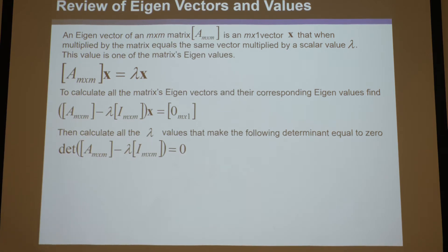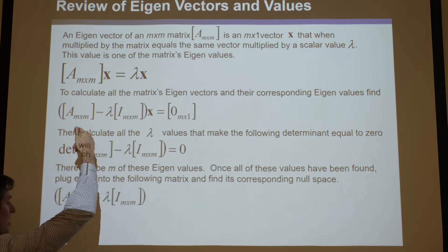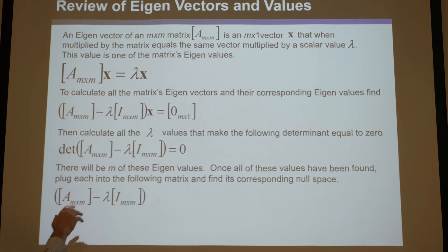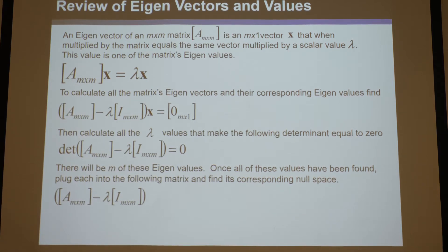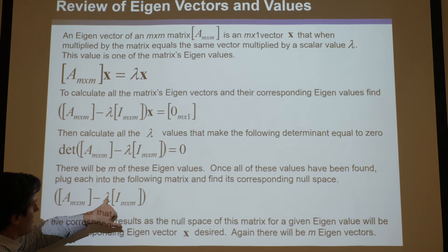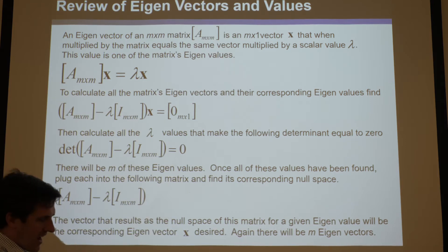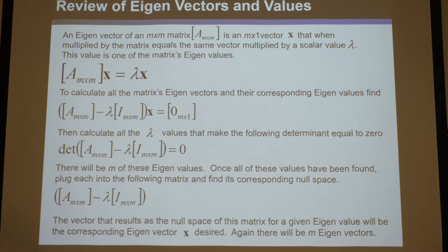Then what you do is plug those lambdas back in — take the matrix, subtract every diagonal from each of those lambdas, and for each one find the corresponding x vector, which you can do by finding the null space. What you'll get is: you plug in one of the m solutions, solve for the corresponding vector, and now you have the eigenvector and its corresponding eigenvalue lambda.